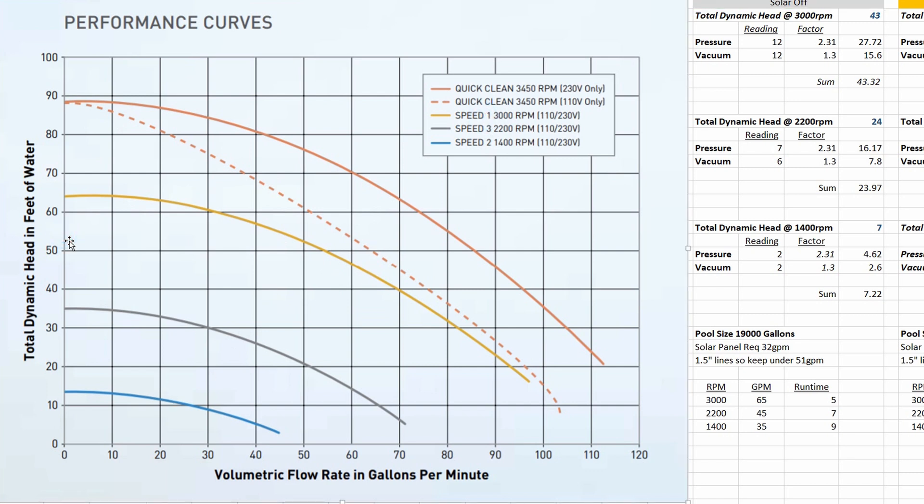So using this chart I can track over from the left where it has my total dynamic head and then see where it intersects with the gallons per minute down at the bottom, which will give me my flow rate, which will let me determine how long I want to run my pool pump for.